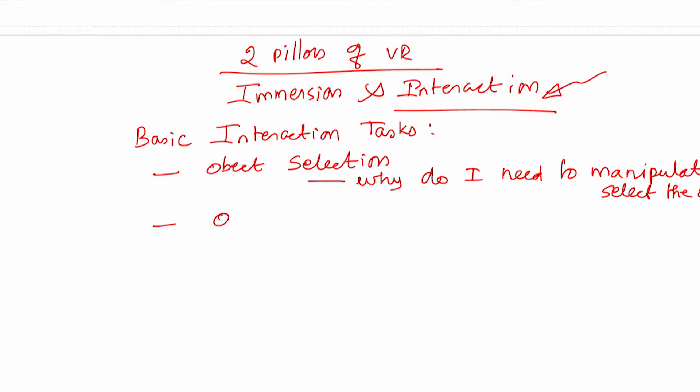The second way of interaction is object manipulation. How do I manipulate an object? Is it just a click of the button, is it selecting, rotating, or any other task? And then the third type of interaction we will be interested in is navigation.